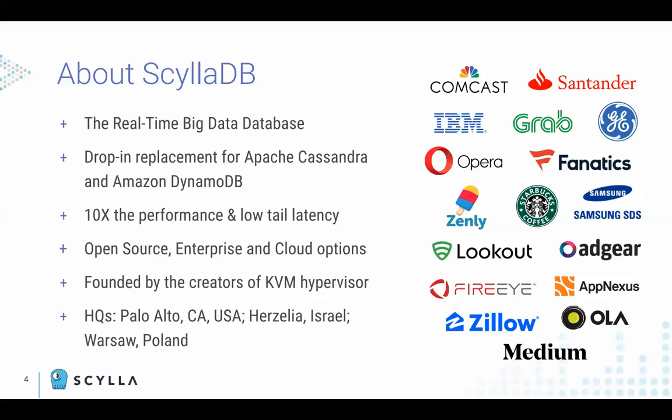Scylla is a NoSQL drop-in replacement for Apache Cassandra and DynamoDB with superior performance and low latency. By drop-in replacement, we mean the same wire level binary protocol and driver applications. In other words, you can use Apache Cassandra driver and DynamoDB API calls with Scylla. Scylla comes in three different flavors. The first one is the Scylla open-source project, available on GitHub and as RPM or DEB packaging for your own download.